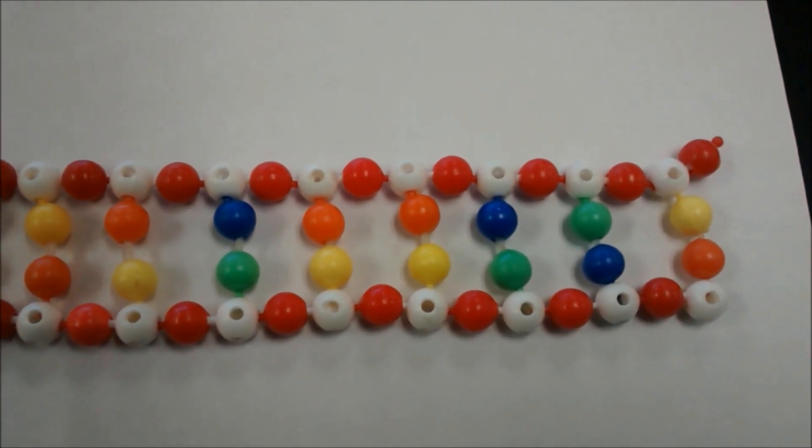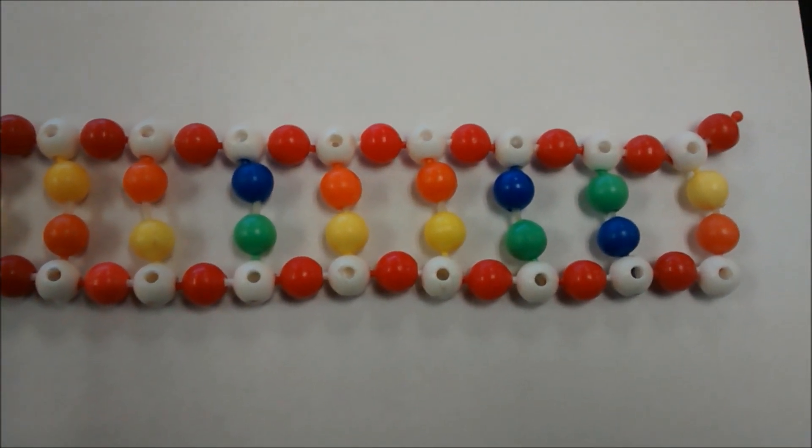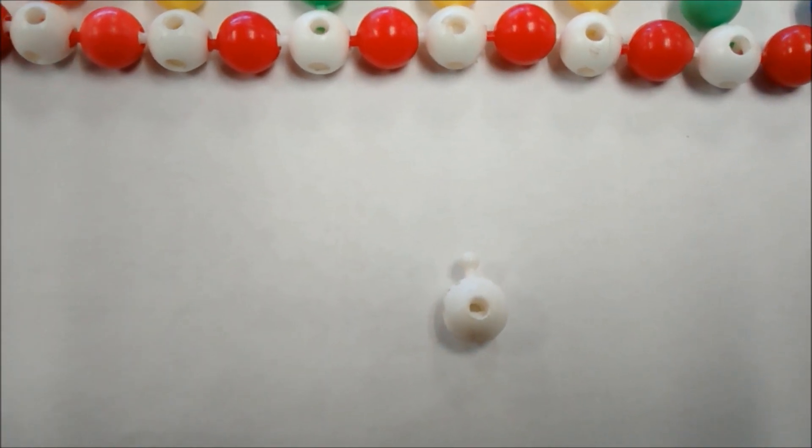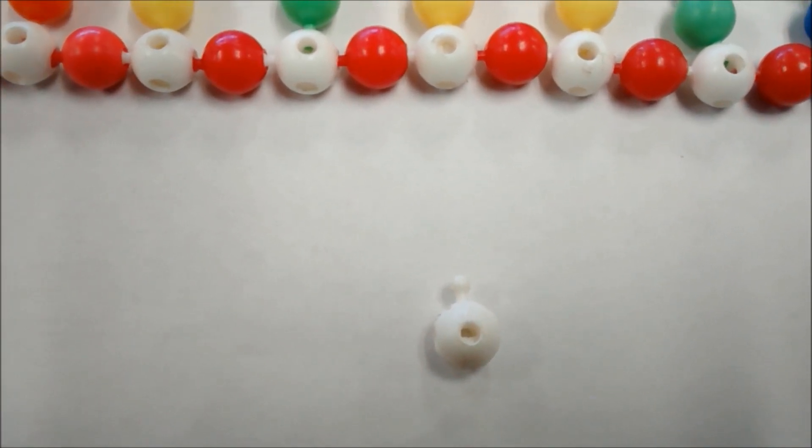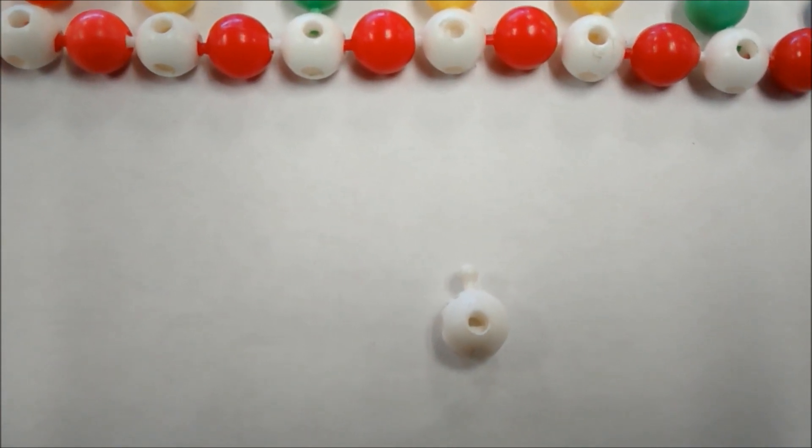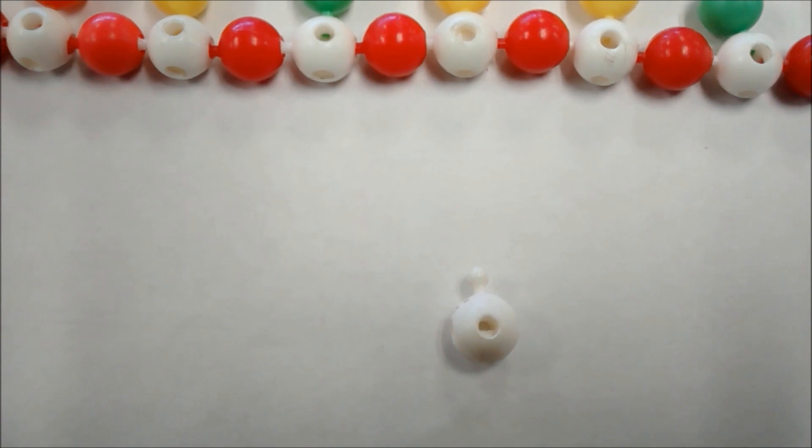So let's look at how these strands are oriented. The white ones represent our sugars, deoxyribose. And remember with deoxyribose, it's very important that we know where our carbons are and know our numbers of our carbons.